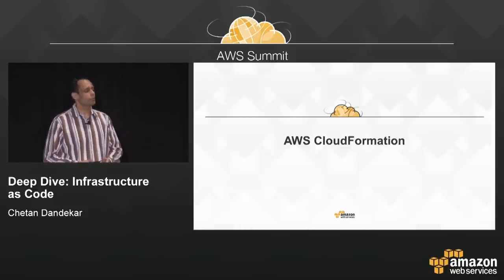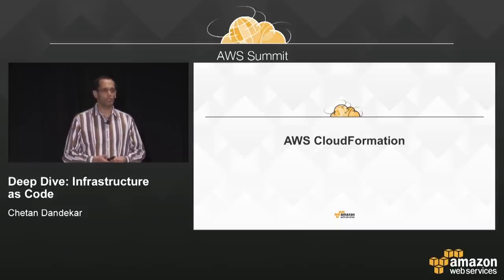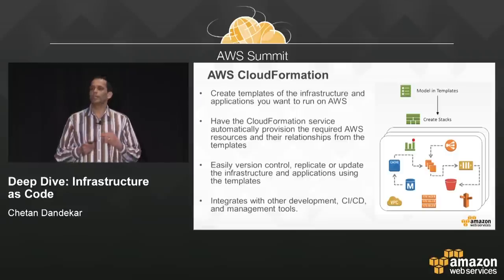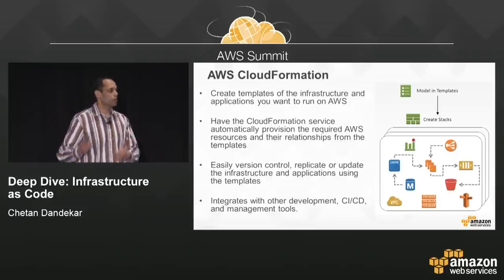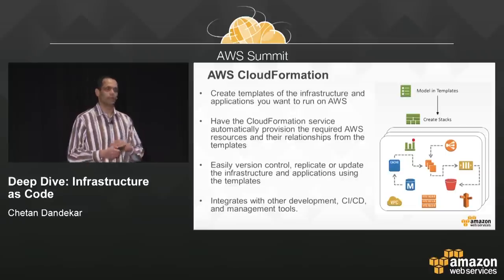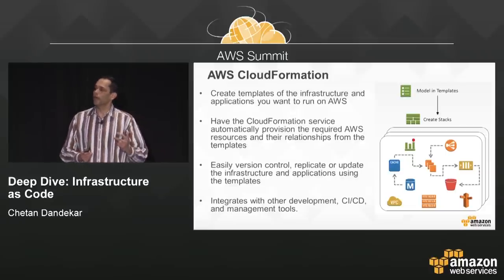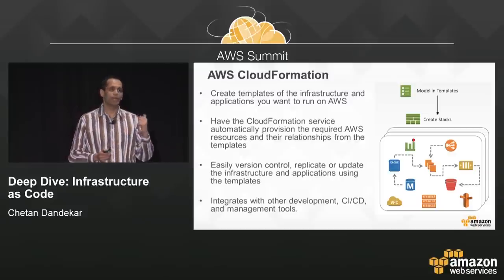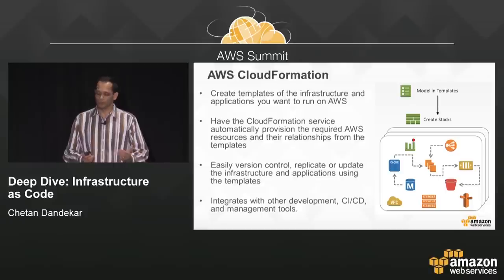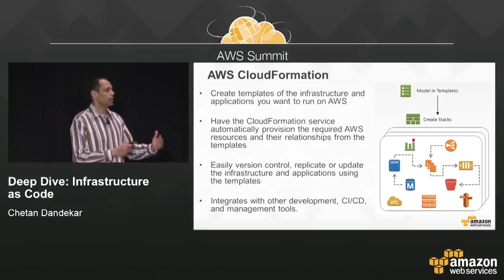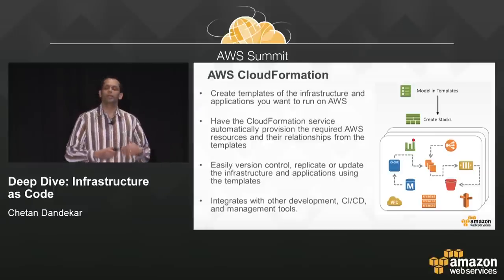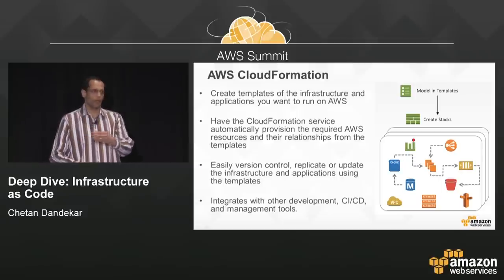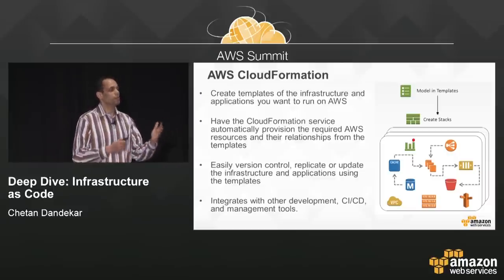How do you do infrastructure as code on AWS? The flagship service is AWS CloudFormation. For those not familiar with it, CloudFormation allows you to create templates of the architectures and applications you want to run on AWS. Architectures can mean traditional network, storage, and compute, or in the new era of cloud computing, DynamoDB tables, ElastiCache clusters, S3 buckets, and so on. You pass those templates to the service, and CloudFormation figures out the steps needed to get you to that architecture — you specify the desired state and CloudFormation figures out how to get there.